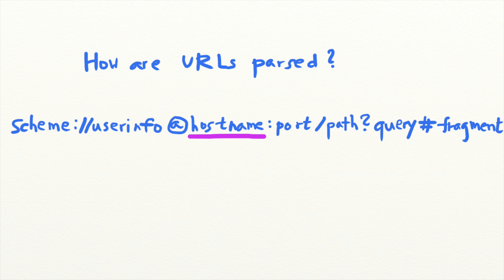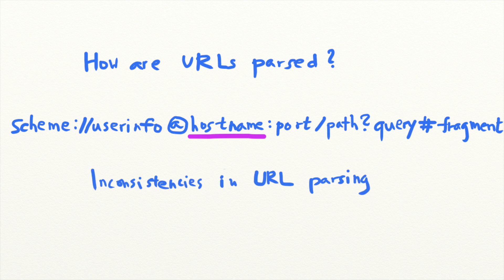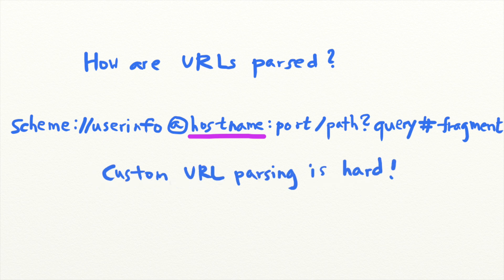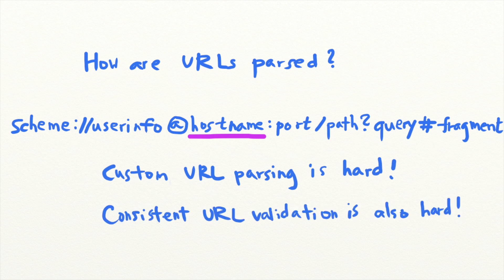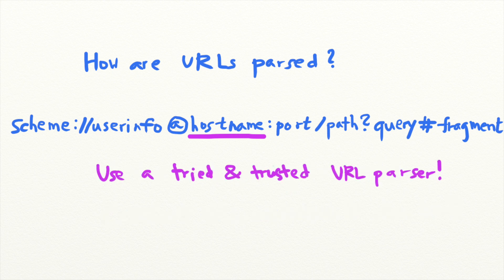There are many more methods attackers use to defeat URL validators, and they all exploit the inconsistencies in the URL parsing behavior of modern browsers. Custom-built URL validators are prone to attacks like these when developers do not consider all of the edge cases. Preventing open redirects means that URL validation needs to be done right for every redirect endpoint, which is why it's so hard to get right. So when validating URLs, you should use a tried and tested library for URL parsing, rather than using your own regexes or parsers.